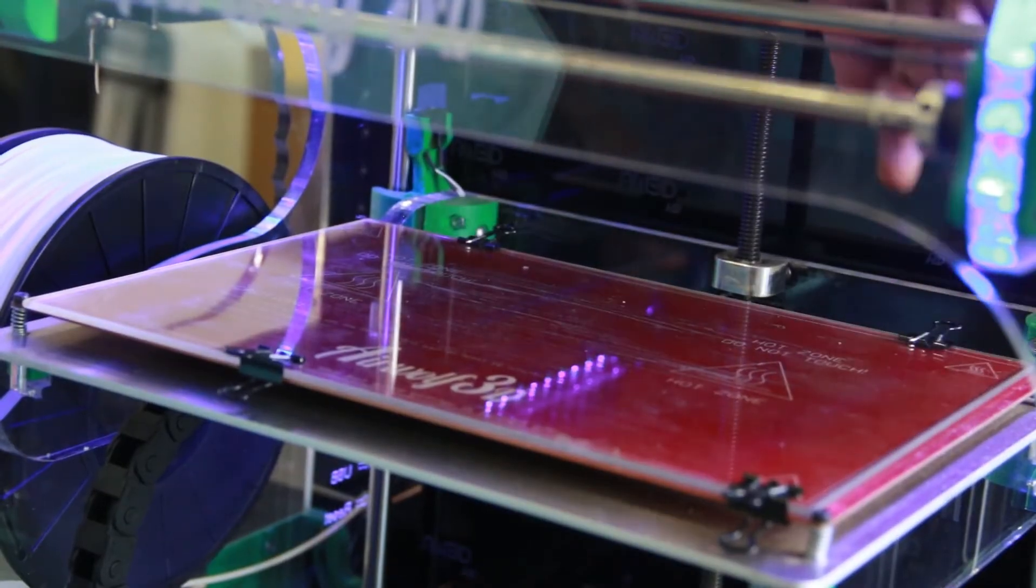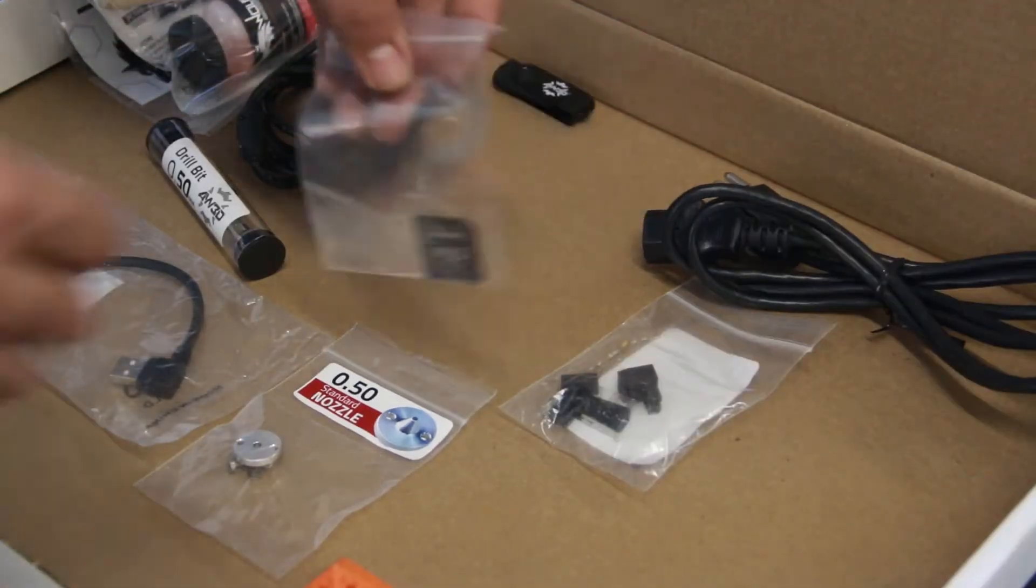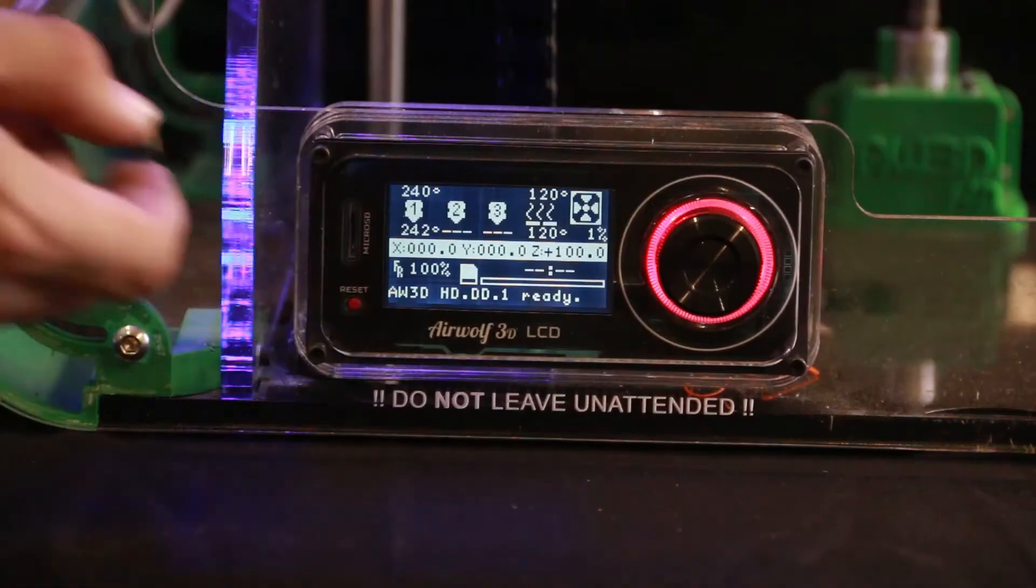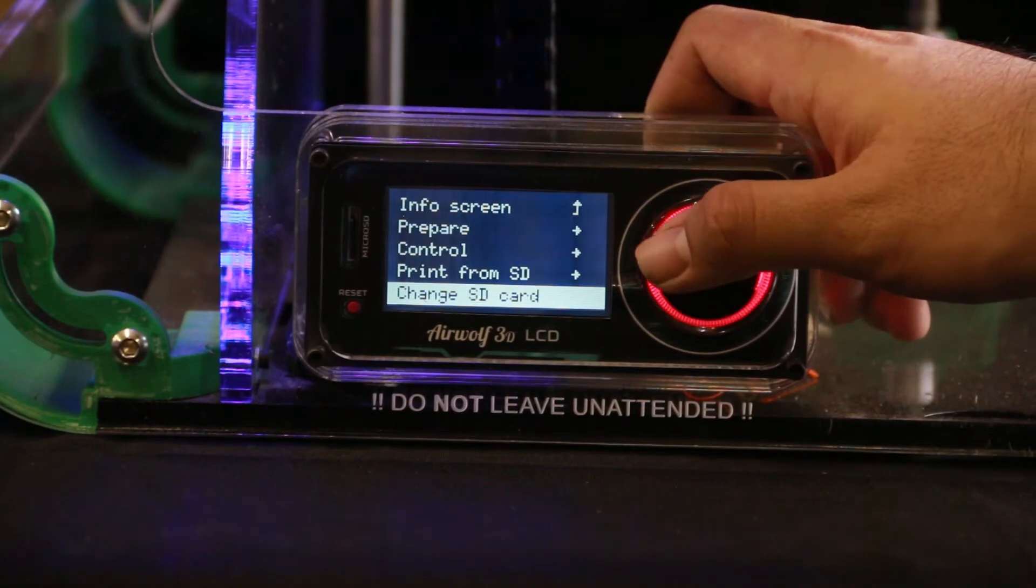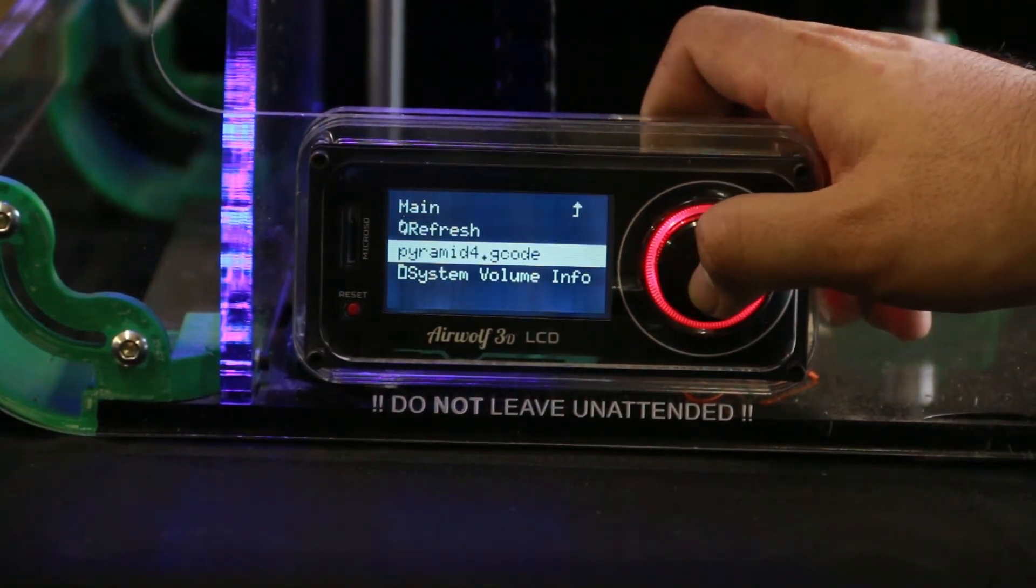Remove the SD card from the SD card adapter and insert it into the slot on the LCD display. On the menu, select Change SD card. Now select Print from SD and then click your desired file.